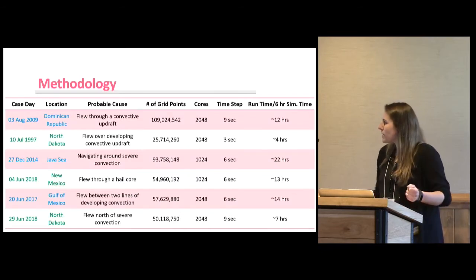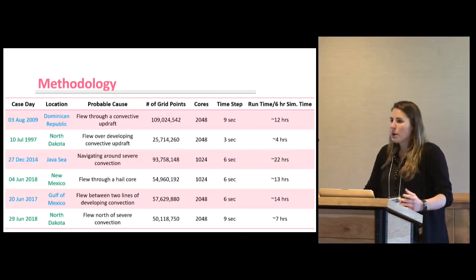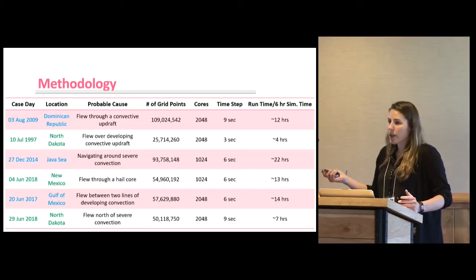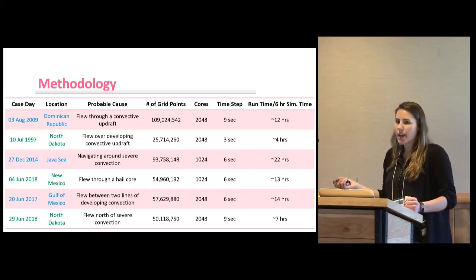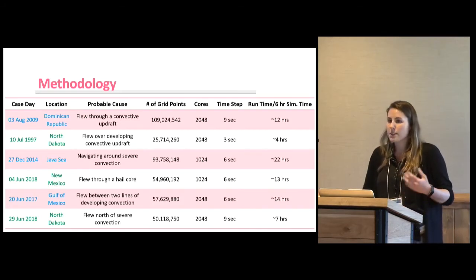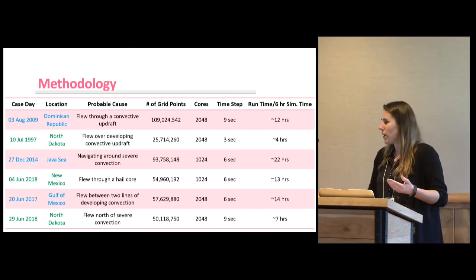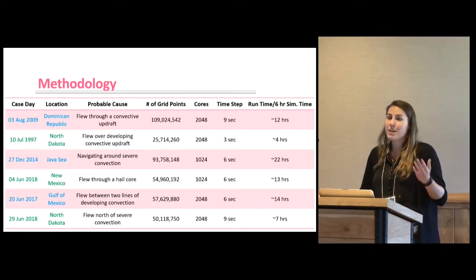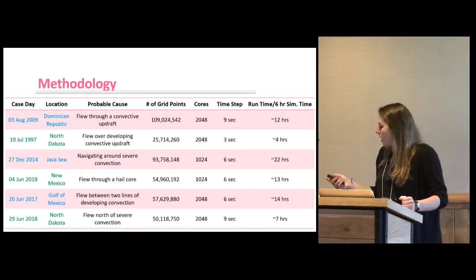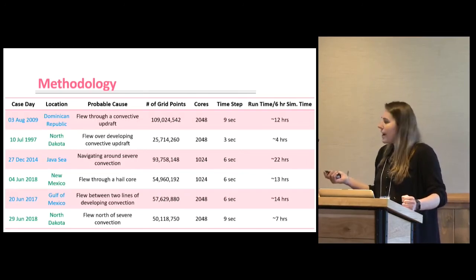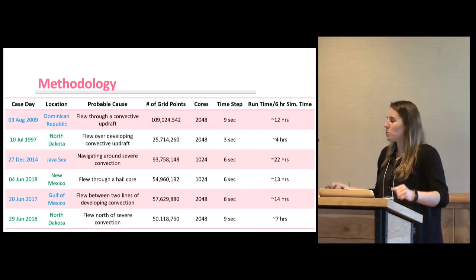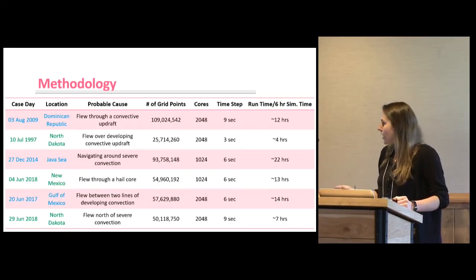For the six simulations, I paired them up — a tropical case with a mid-latitude case where the cause of turbulence was hypothesized to be the same, such as a breaking gravity wave or the plane being in the wrong place at the wrong time and going through an updraft. It was a comparison of similar cases in different regions to see what the turbulence looks like in those areas.